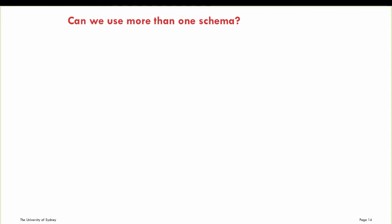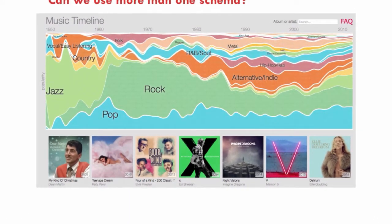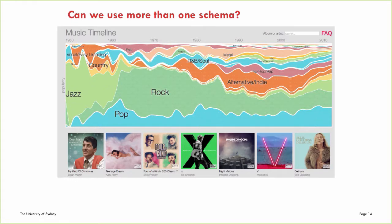But can we use more than one schema? Definitely. This graph, produced by Google's Music Timeline tool, shows a variety of music genres and their popularity since the 1950s. In fact, the schema of time and classification are very frequently used together to present the development of ideas or phenomena over time in literature reviews. Keeping with our music theme, this is an excerpt from a literature review on the concept of world music. Here, time and classification are being used together as the primary organizing principles. The writer first explains the emergence of the term 'world music,' which puts it in a different category to simply 'music' referring to Western music. A few paragraphs later, he uses a time framework to chronicle the trends in music studies. This is an example of how analytical frameworks can be combined in literature reviews.